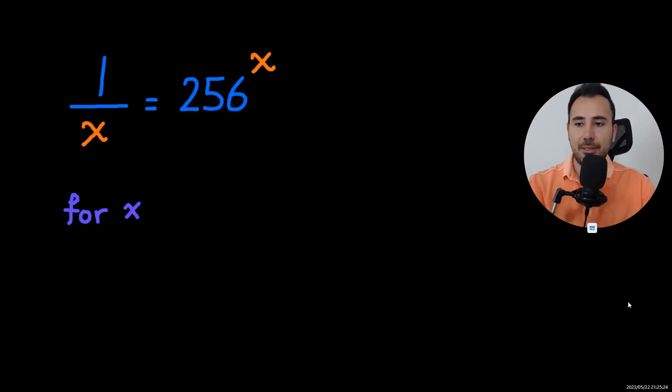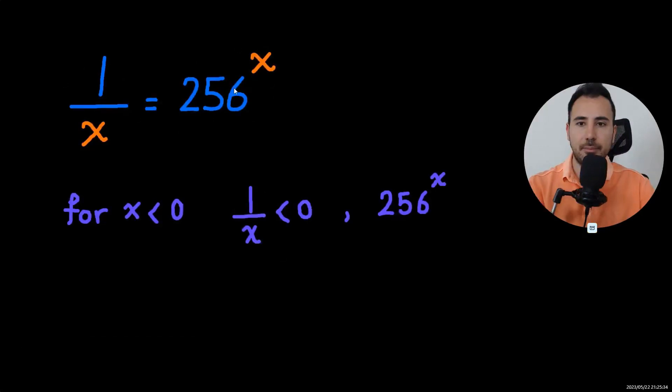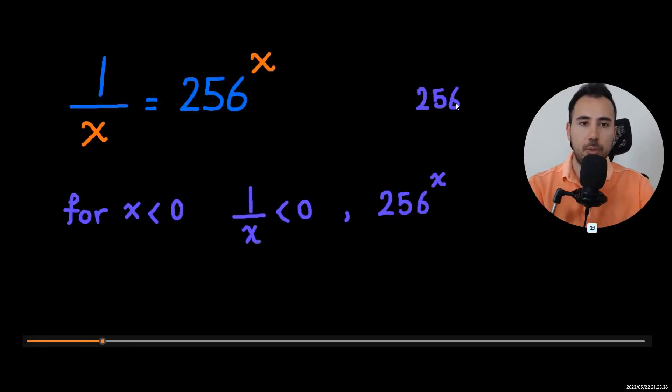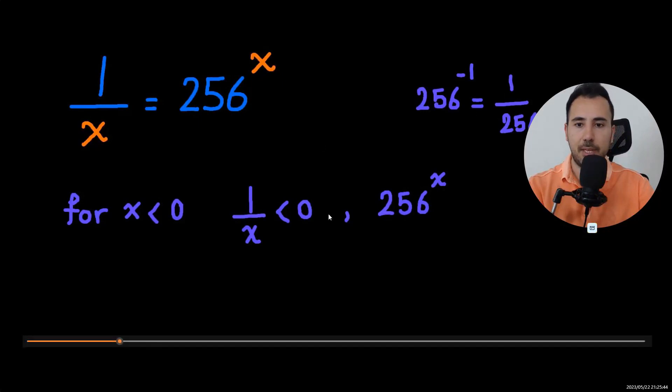For x's that are negative, 1 over x, of course, is something negative, and 256 will be something positive. For example, 256 to power of negative 1 is going to be 1 over 256, which is positive. So if this side is negative, this side positive, no solutions for these x's.